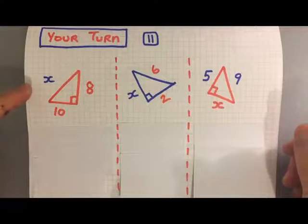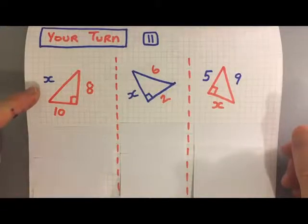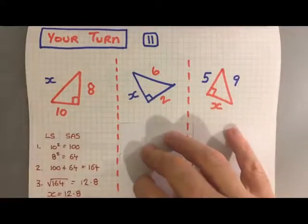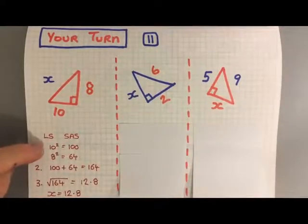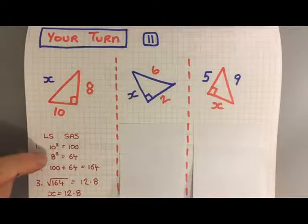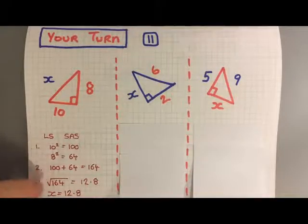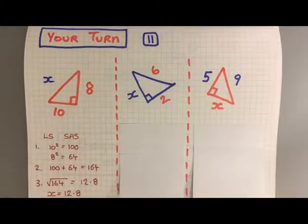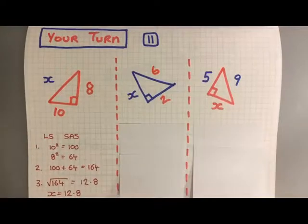Okay guys, welcome back. So you've had a go at these. Here you were finding a long side, so you were going to square, add, square root. So we squared both of them: 10 squared was 100, 8 squared was 64. We added those, find the square root of 164, turned out to be 12.8. Job done.